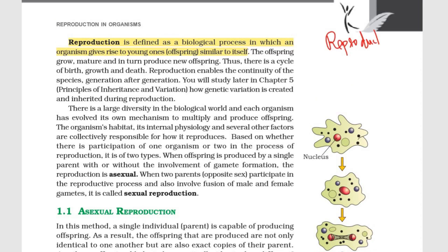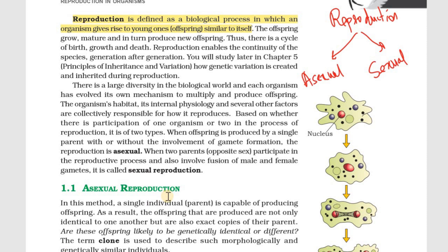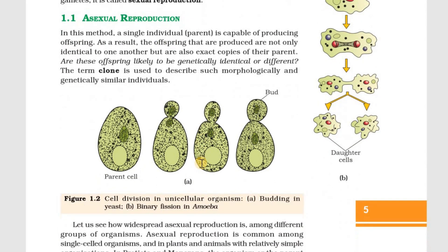Reproduction is classified into two types: one is Asexual Reproduction, and two is Sexual Reproduction. Asexual Reproduction involves a parent and offspring. If there is a parent, the offspring is genetically similar to that parent. There is no change in genetic material. The offspring are the exact copies of parents — these are important points of asexual reproduction.